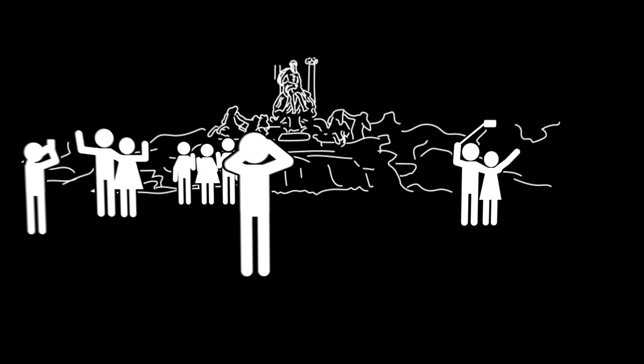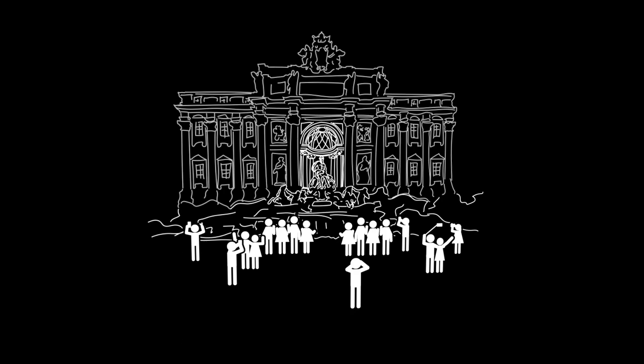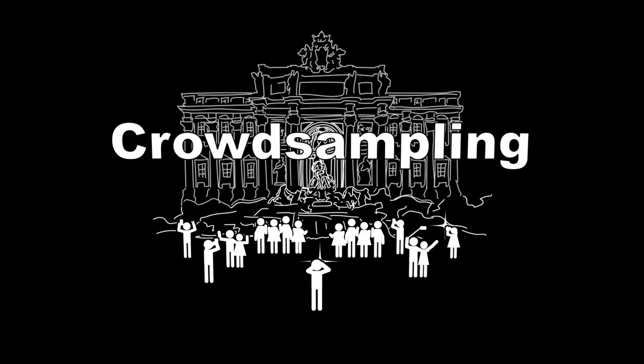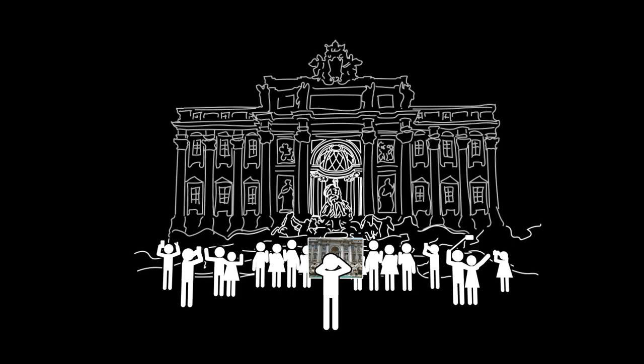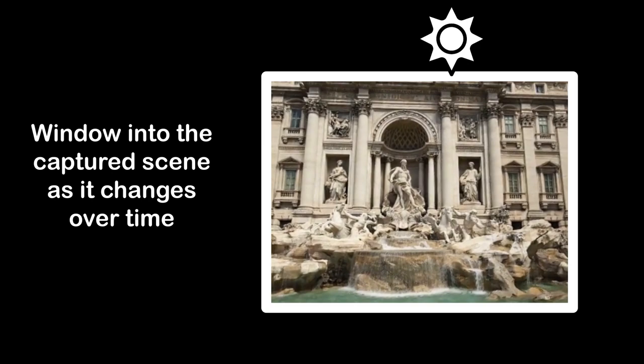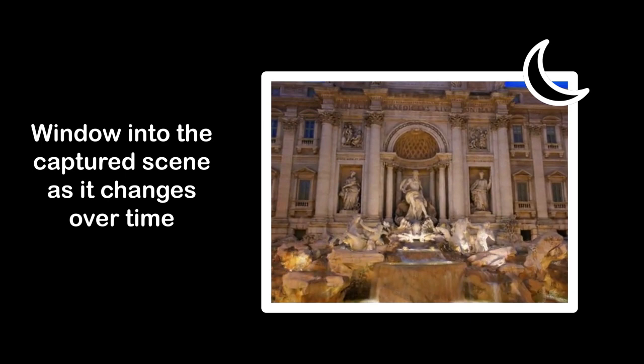Most of us carry a camera almost everywhere we go. Nowhere is this more apparent than at a popular tourist attraction, where you'll often find as many cameras as there are people. This leads to a lot of photos, which we can think of collectively as the result of a kind of crowd sampling over time. Now a lot of those photos eventually get posted online, where they become freely accessible to anyone with an internet connection. So in this work, we explore how to use that crowd-sampled data to turn regular photos into something that lets us move around a scene both in space and across changes to appearance that happen over time.